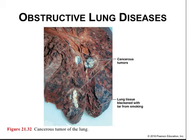Lung cancer refers to tumors that arise from epithelia lining the bronchi, bronchioles, and alveoli. There are many types of lung tumors, each with a different predominant cell type, clinical course, and rate of metastasis. The number one risk factor for lung cancer is cigarette smoking, which raises the risk 13-fold, and heavy smoking as much as 60 to 70-fold. Passive smoke increases the risk of developing lung cancer by about one and a half times that of a non-smoker, though some of the research on secondhand smoke is still up for debate.